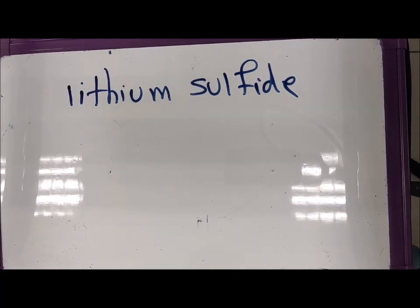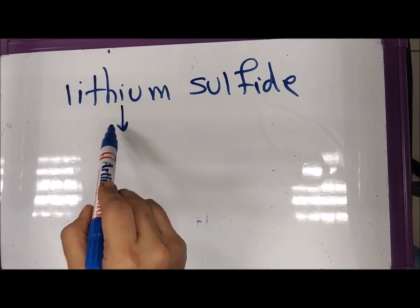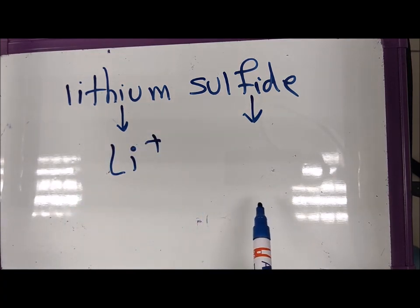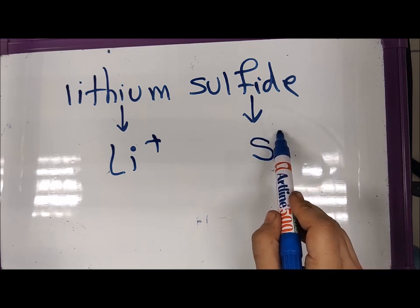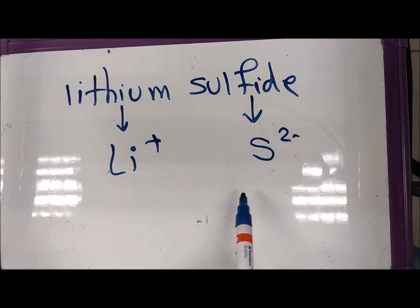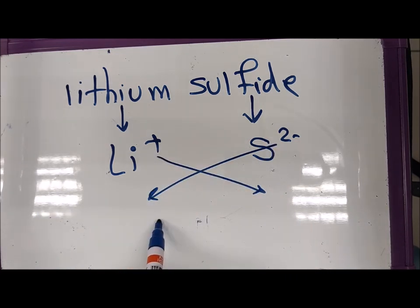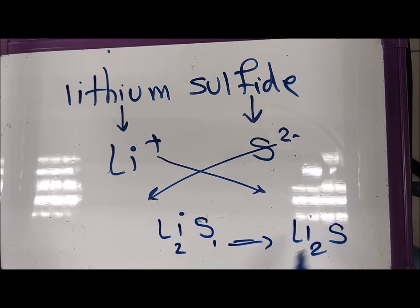Another example: lithium sulfide. Write the ions first — lithium ion is Li⁺ (1+) and sulfide ion is S²⁻. Swap the numbers: lithium gets the subscript 2 and sulfur gets 1. So the formula becomes Li₂S. This is the formula of the ionic compound lithium sulfide.